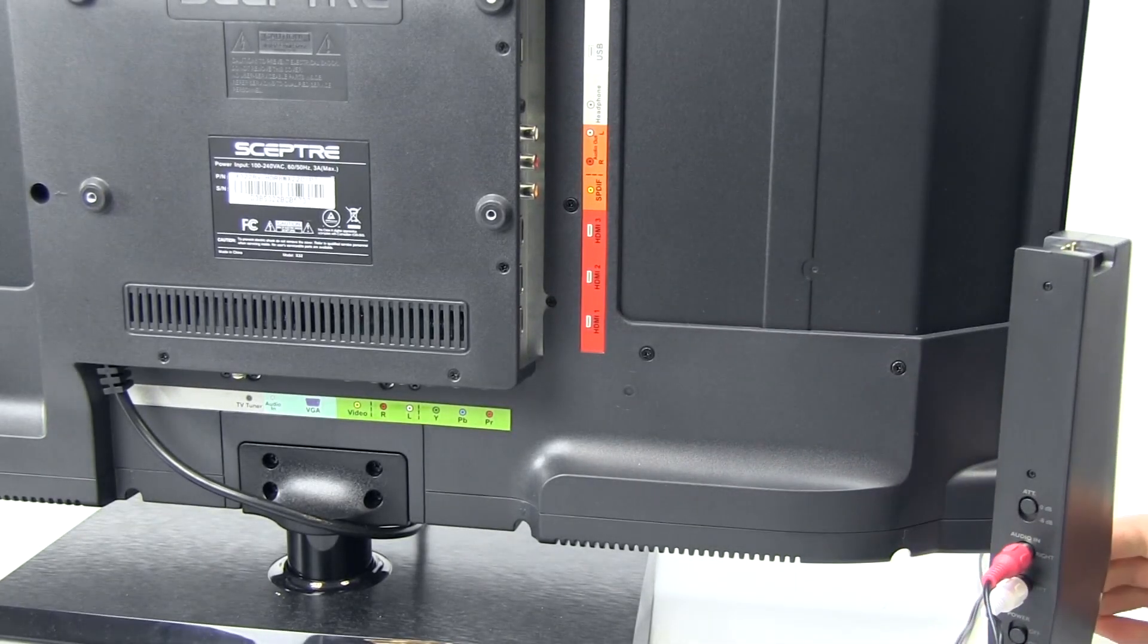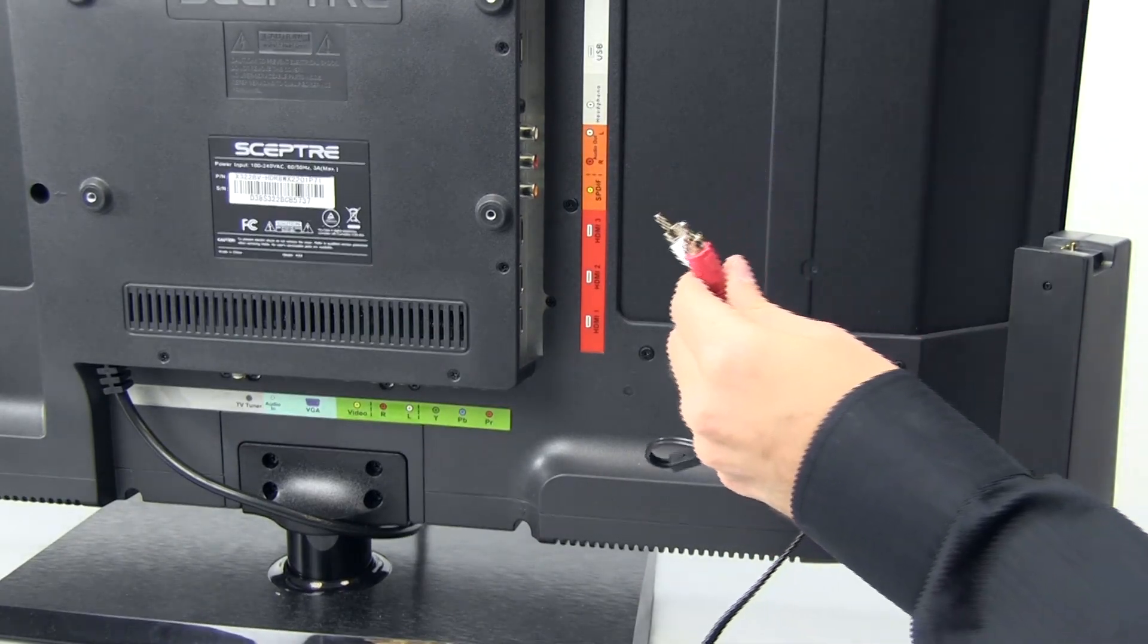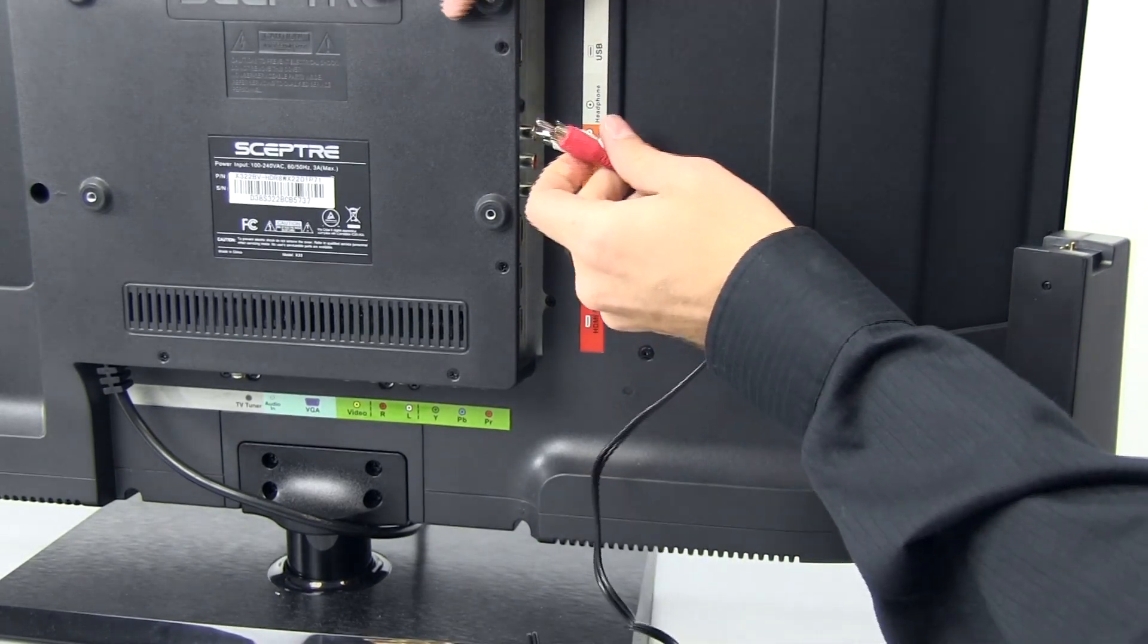Then on the audio device, in this case a TV, you'll want to connect the other end of the RCA cables into the audio out connections on the TV.